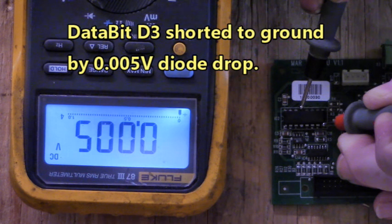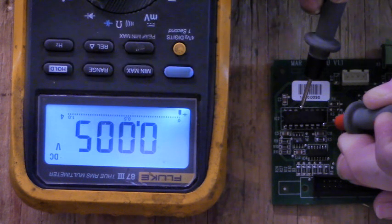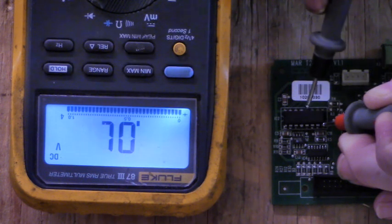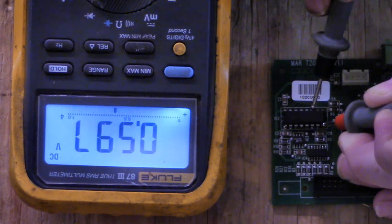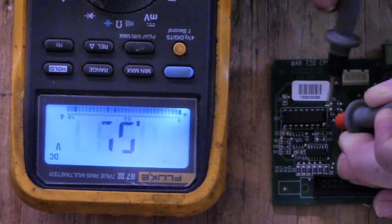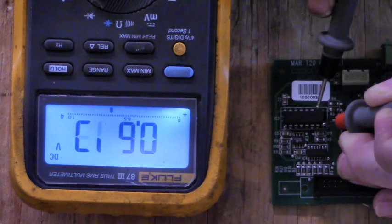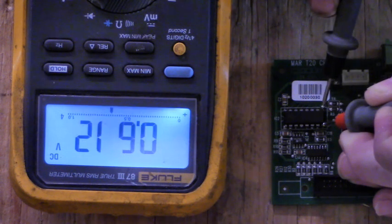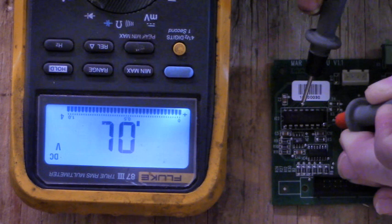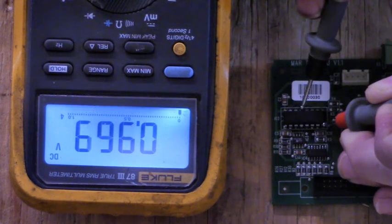Let's go to data bit four, that's good, 0.599. Data bit five, 0.597, that's good. Data bit six, 0.611, it's not shorted, that's good. Here's the last one, data bit seven, 0.612. Let's go back and look at data bit three. 0.005. Data bit three is shorted.